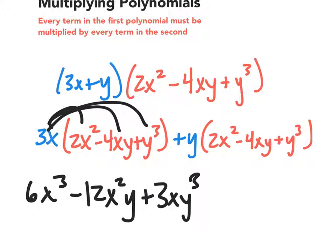Remember, whenever you're multiplying like variables, like the x and the x, you just add their exponents. Otherwise, you just tag it on. 3x times y cubed is 3xy cubed. Now let's do that all with this y.